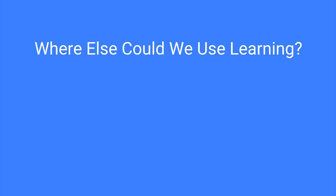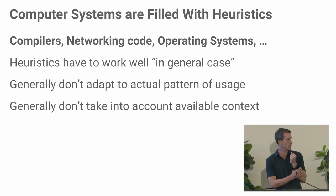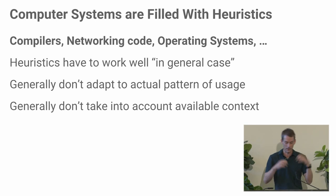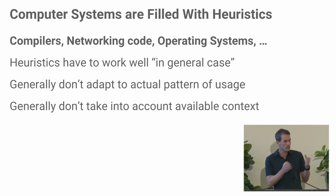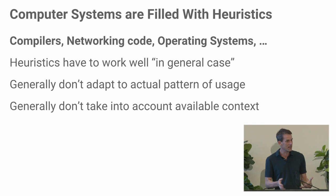This is one example of a computer systems problem that hasn't traditionally been looked at from an ML perspective, and we think there are a lot more of these. Computer systems in general are filled with handwritten heuristics—like should I insert this block into the buffer cache? Compilers have all kinds of decisions: should I tile the loop this way or that way, should I interchange the loop nest? These heuristics generally have to work well in the general case and can't adapt to the actual usage pattern. Even simple LRU cache replacement policies fail badly for some pathological access patterns, and they generally don't take into account available context.